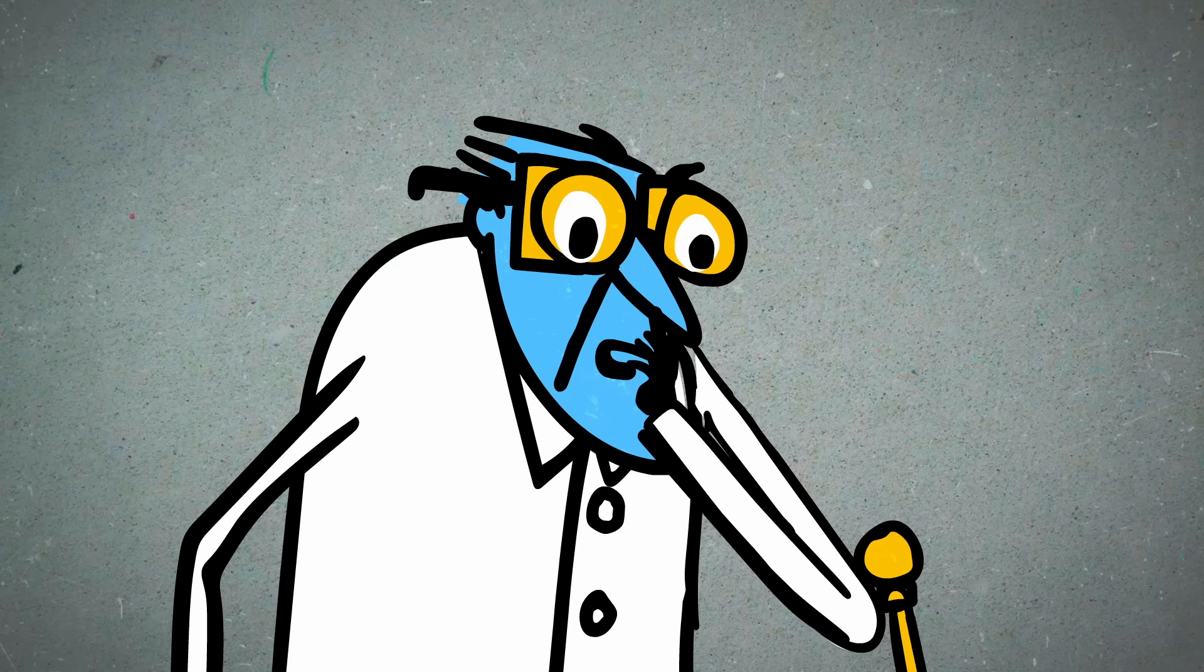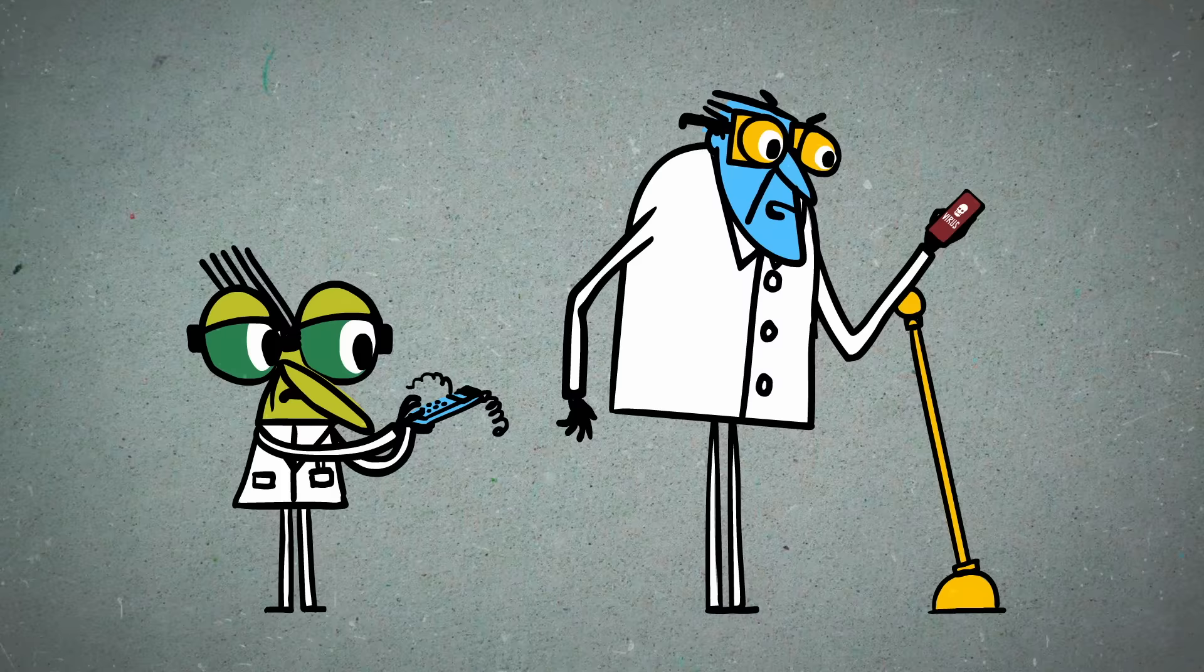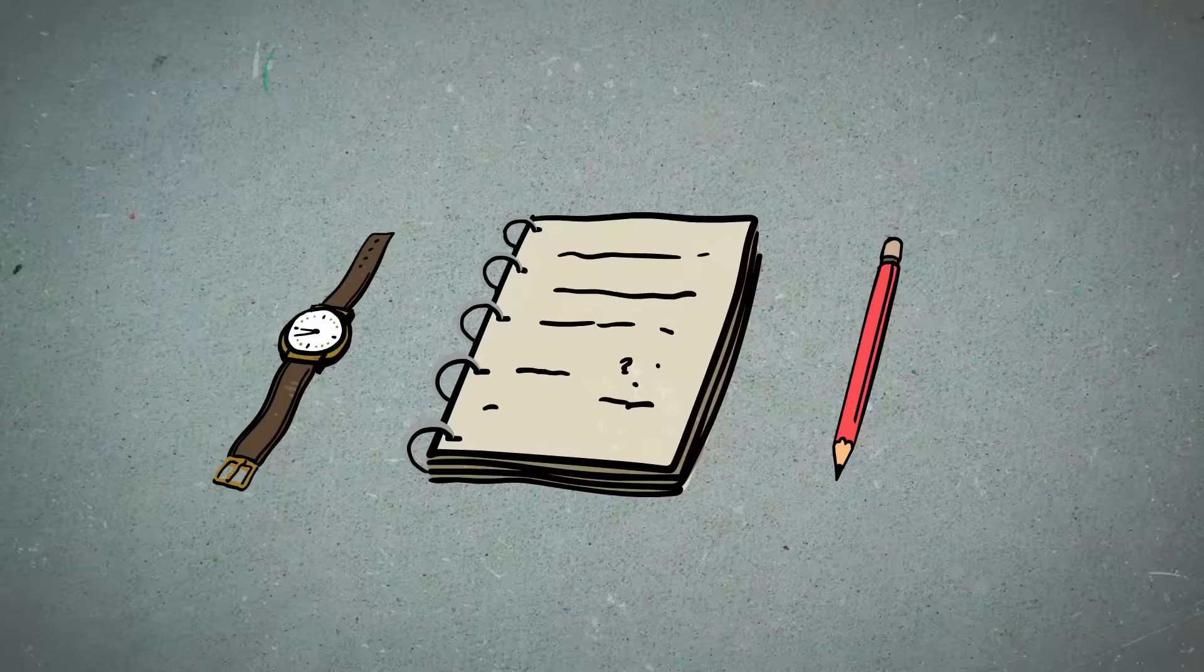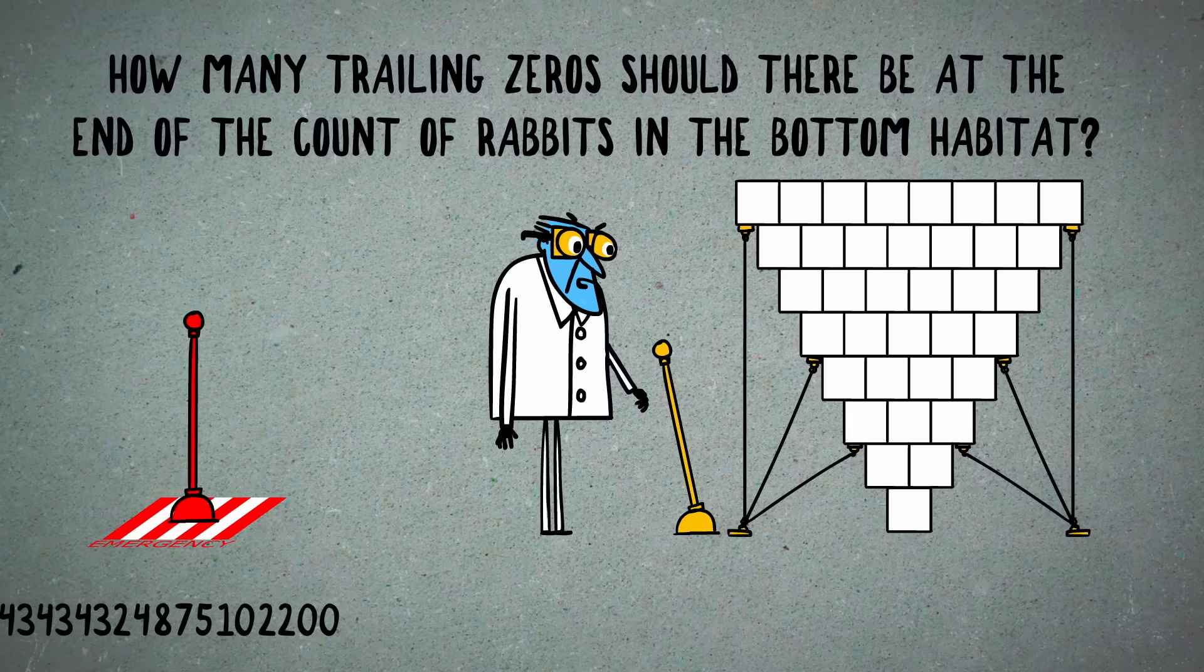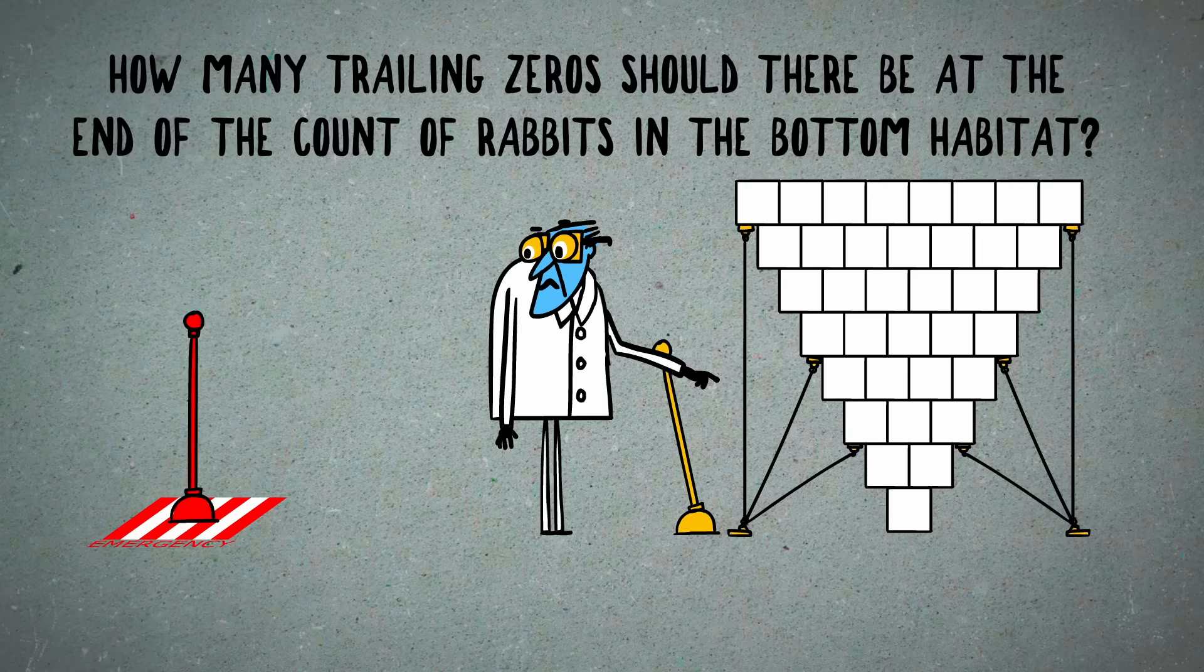To make matters worse, your devices and calculators are all malfunctioning, so you only have a few minutes to work it out by hand. How many trailing zeros should there be at the end of the count of rabbits in the bottom habitat? And do you need to pull the emergency shutdown lever?